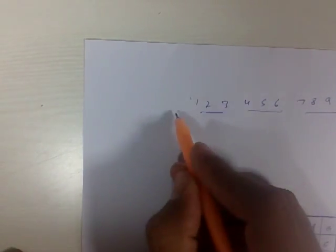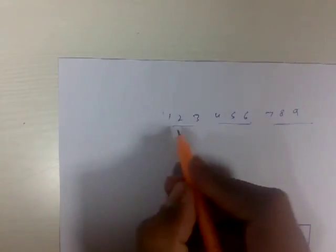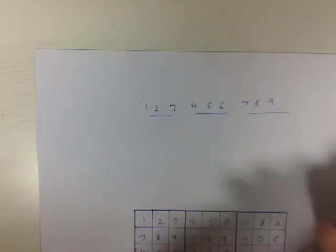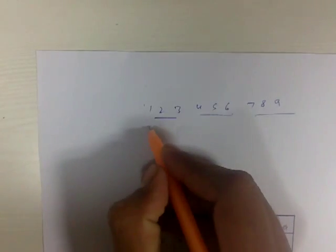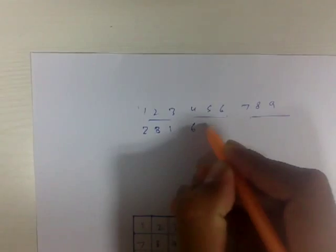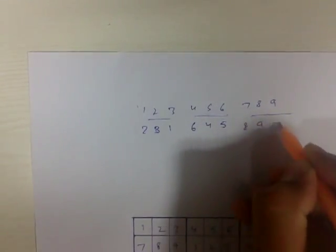Now, come back. Now, take this series again and make the numbers in a different order so that none of the numbers overlap each other. So, I will take 2, 1, 2, 3, 1, 6, 4, 5, 8, 9, 7.